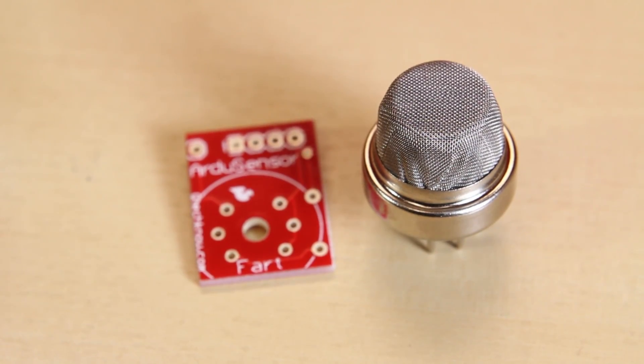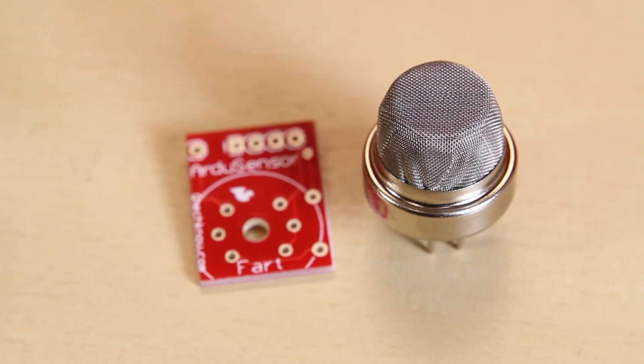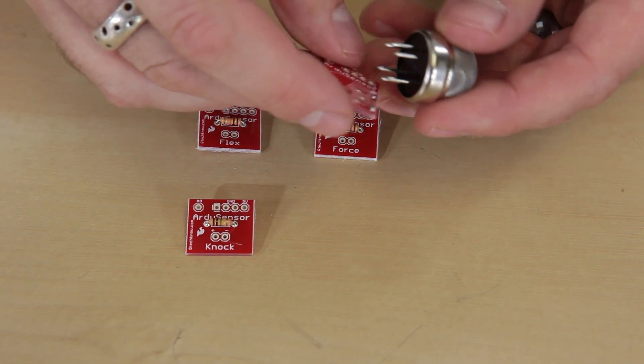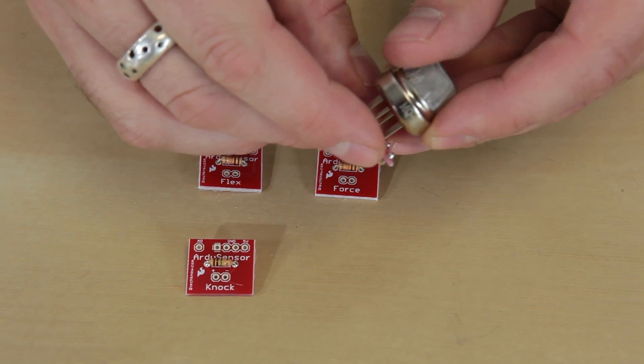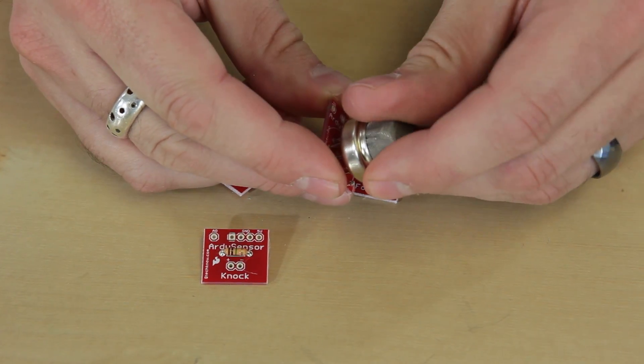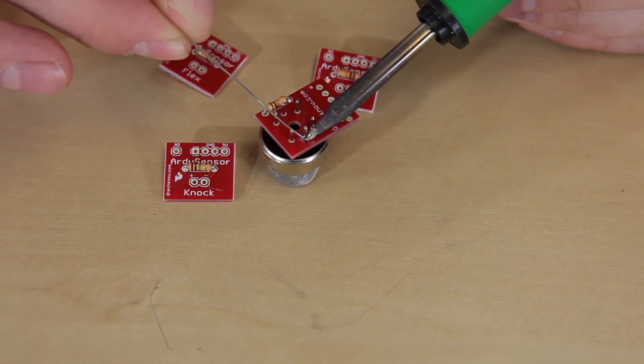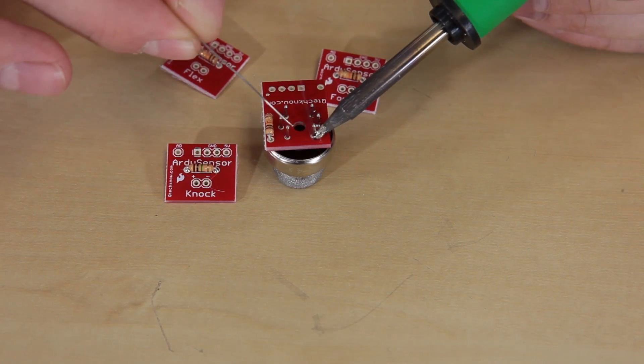Next up we're going to solder the fart sensor, or the gas sensor, onto the board. There's six pins on the bottom of the gas sensor and orientation doesn't matter, so just line up the six pins. When you push the sensor down in, just make sure you don't bump into the resistor you soldered previously. Flip the board over and solder the six pins.